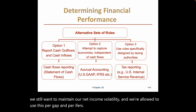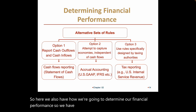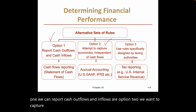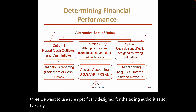For determining financial performance, we have alternative sets of rules. Option one: report cash outflows and inflows. Option two: capture economic events independent of their cash flows. Option three: use rules specifically designed for taxing authorities. Typically, we prefer to fall within options one and two.